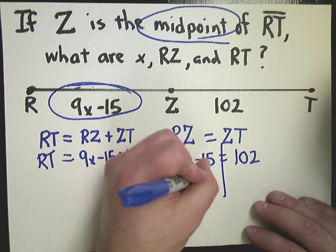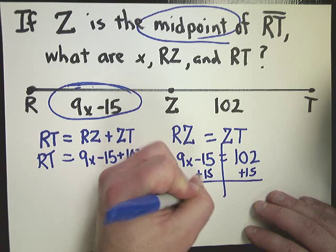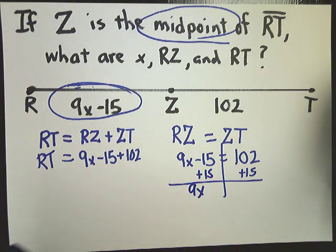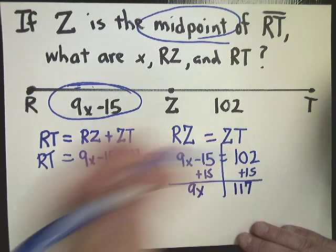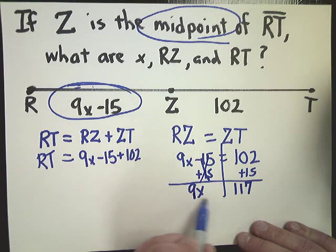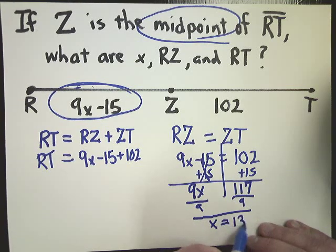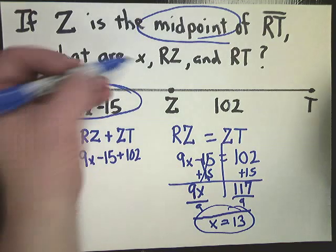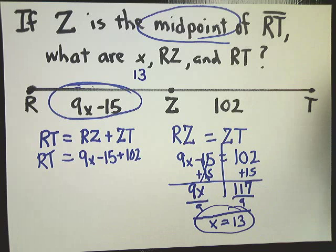I'm just going to solve it as an equation. I'm going to add 15 to both sides. 9x equals 117. Add 15 to both sides. Now I need to get rid of times 9, so I'm going to divide. So x is equal to 13, which solves one of the questions, or answers one of the questions above. It asks what x is. Well, x is equal to 13.